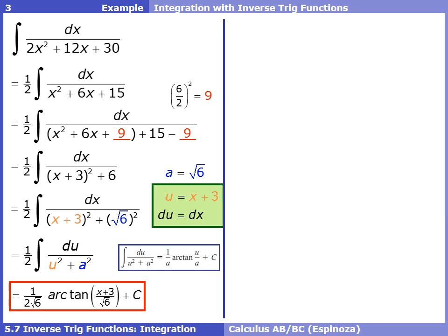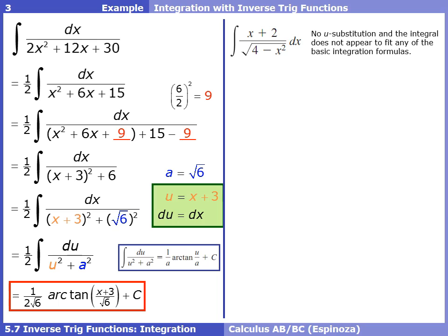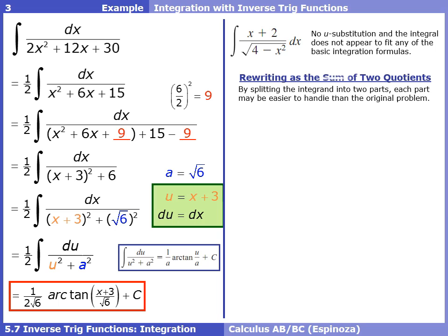This last example is a combination of a couple of different integral techniques. There's no simplification and no u-substitution that works — if we tried u equals 4 minus x squared, then du would be negative 2x dx, which doesn't help eliminate the x plus 2 in the numerator. So what we're going to do is rewrite this as a sum of two quotients, splitting x plus 2 over the square root of 4 minus x squared into two separate fractions.